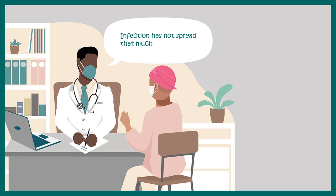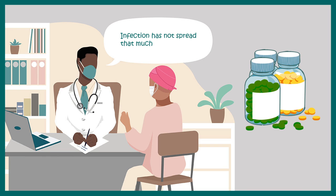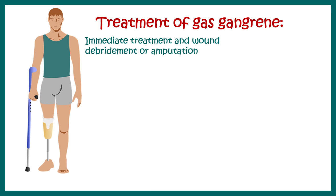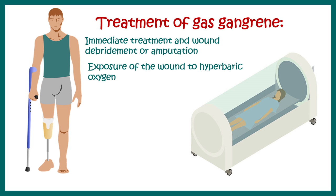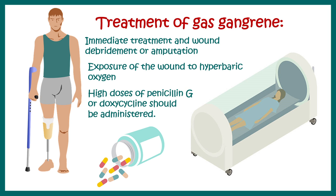This infection is bacterial and therefore treatable. If the infection has not spread significantly, the doctor would prescribe antibiotics to combat it. In extreme situations, amputation of specific digits or a portion of the limb may be necessary. Hyperbaric oxygen therapy may also be used, since oxygen is harmful to these anaerobic pathogens — making the bacteria uncomfortable in oxygen-rich environments. High doses of penicillin and doxycycline should be administered to kill these pathogens.